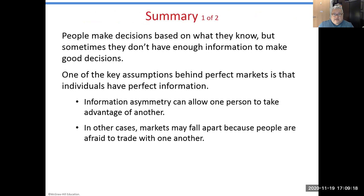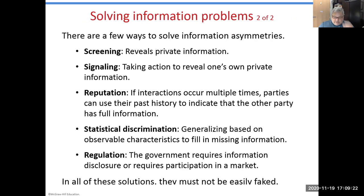What kinds of mechanisms do these information processes use to restore symmetry in information? The primary answers are screening and signaling strategies. A signaling strategy is like dressing up to attend a wedding — you signal your regard for the people getting married. A screening tool is your resume: when you build a resume to look for a job, it provides information that makes it easier for hiring managers to know you qualify for the role they are seeking to fill.